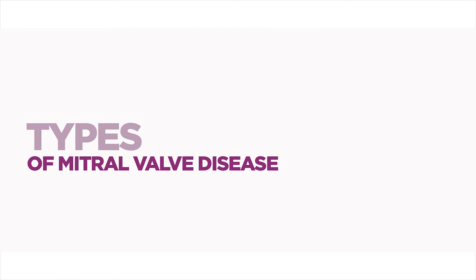The two types of mitral valve disease are mitral stenosis, a narrowing of the valve, or mitral regurgitation, which is the leakiness of the valve.